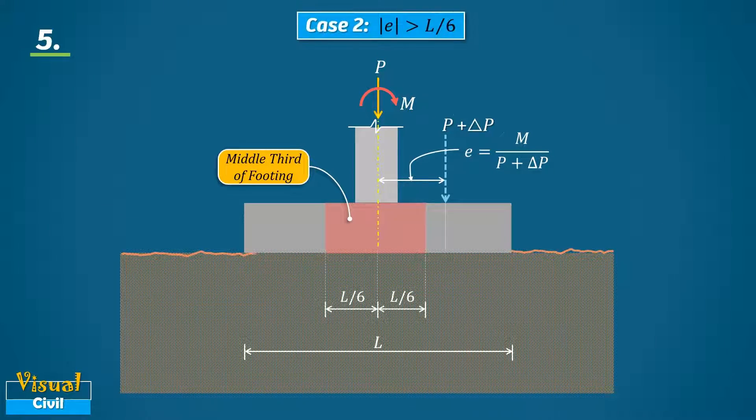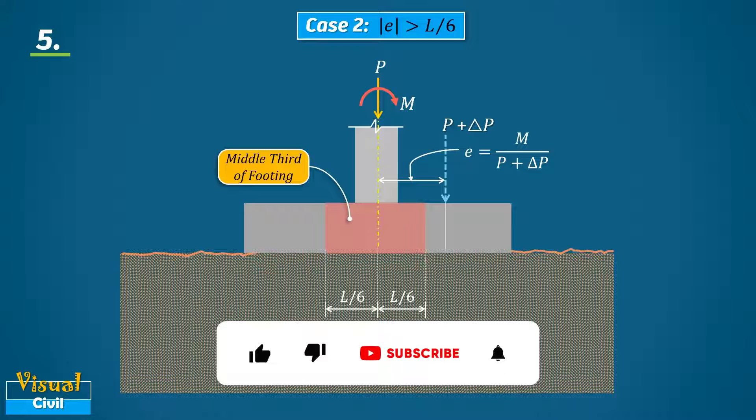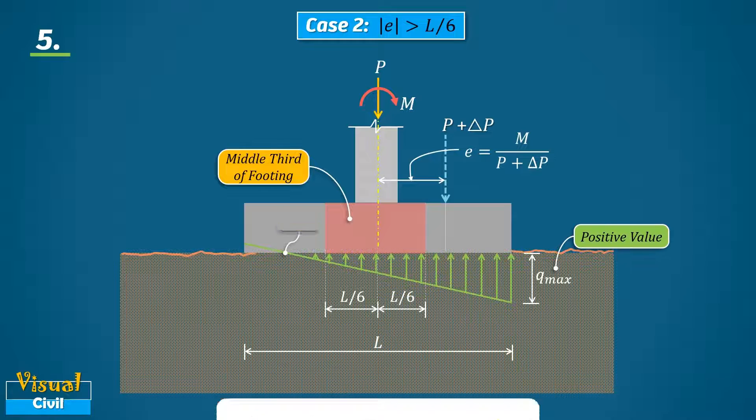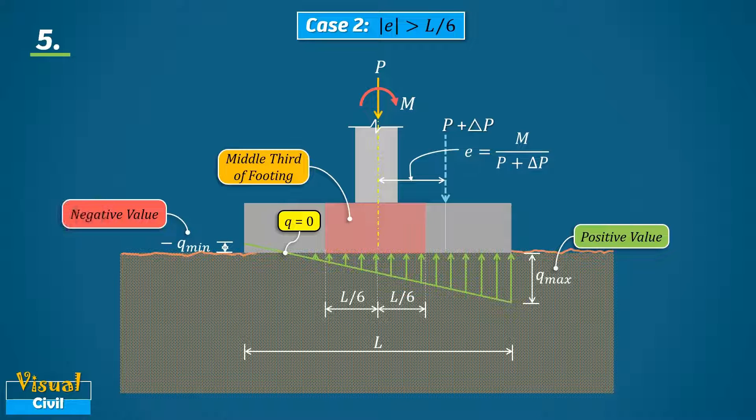But if the eccentricity is outside the middle third of footing, meaning eccentricity is more than L by 6, this results in a negative value of minimum upward pressure. Therefore, the area of footing from zero upward pressure to negative pressure will be in no contact with soil.